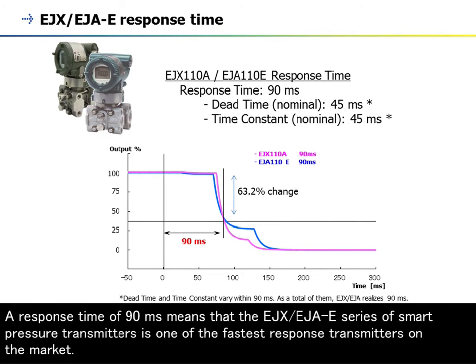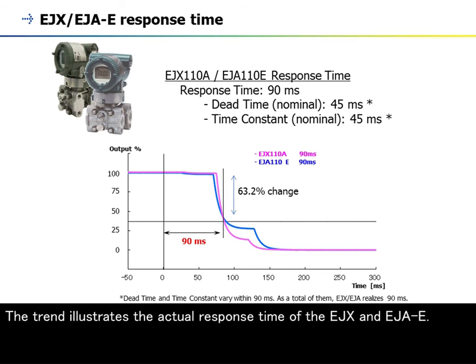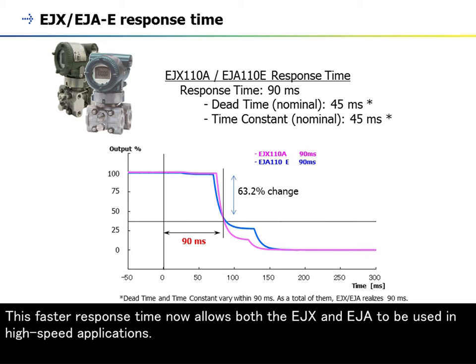A response time of 90 milliseconds means that the EJX or EJAE series of smart pressure transmitters is one of the fastest response transmitters on the market. This fast response time allows a user to track process changes more accurately, thus improving plant quality, efficiency, and safety. The trend illustrates the actual response time of the EJX and EJAE.